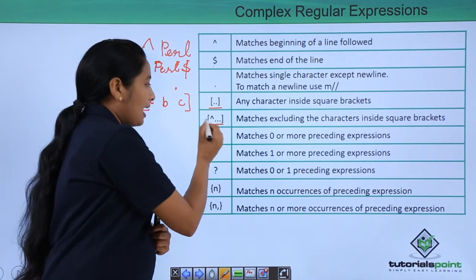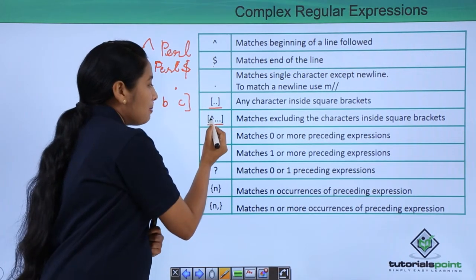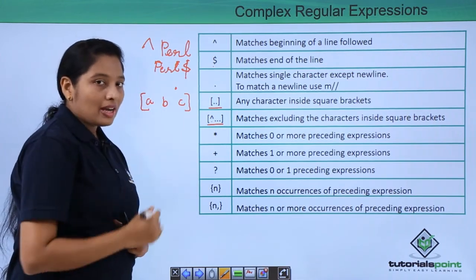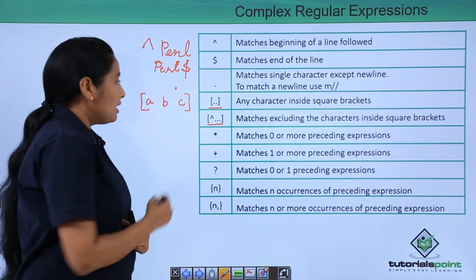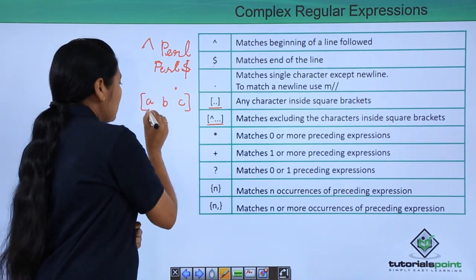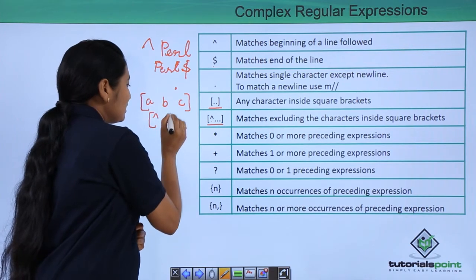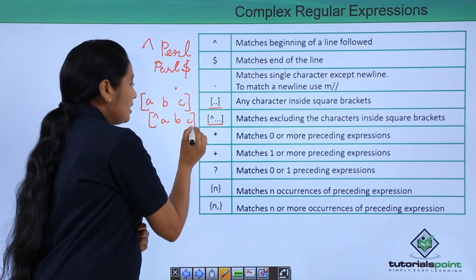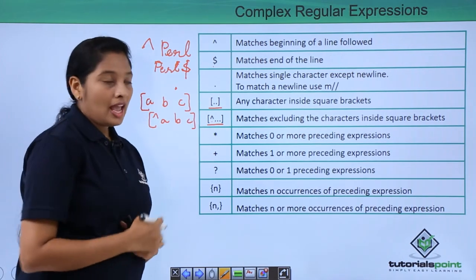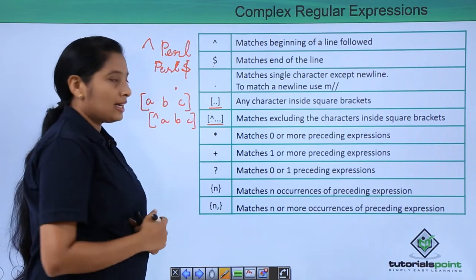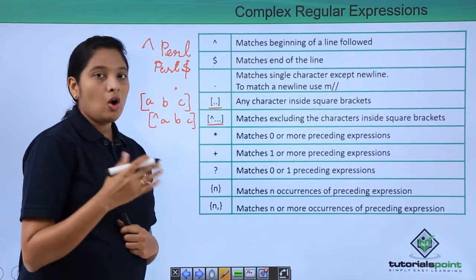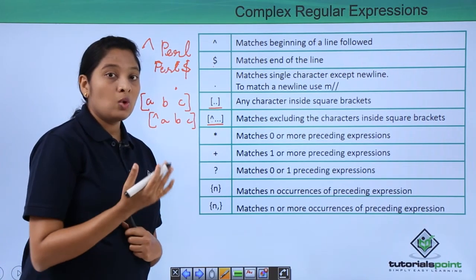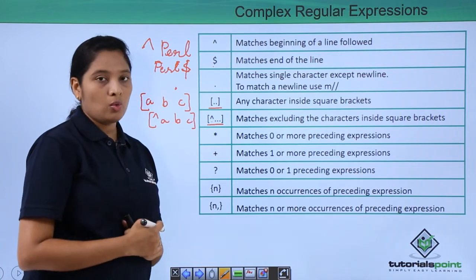Next is a character set with a caret symbol inside. If you have a caret symbol inside the character set, that means other than the characters A, B, or C — excluding those characters, the remaining whatever pattern is there, those lines you will be getting.